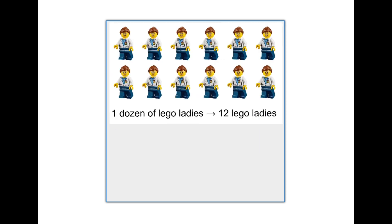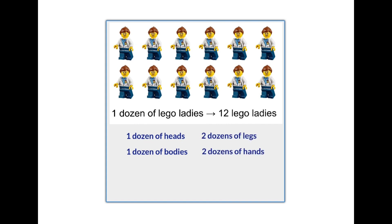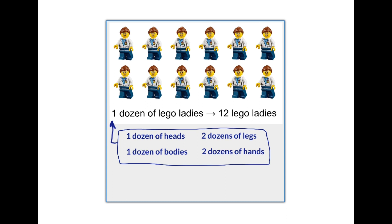To make 1 dozen of lego scientists, we would need 1 dozen of heads, 1 dozen of bodies, 2 dozens of legs, and 2 dozens of hands — so 1 dozen of lego scientists is made out of 6 dozens of parts. In a similar way, 1 mole of water is made out of 3 moles of parts: 1 mole of oxygen atoms and 2 moles of hydrogen atoms.